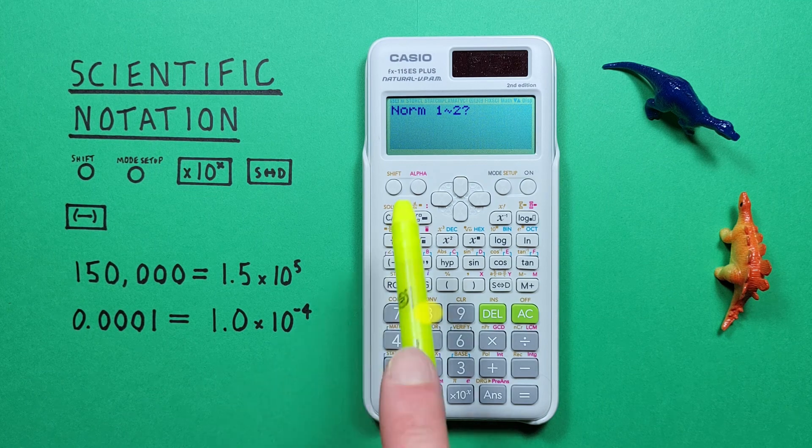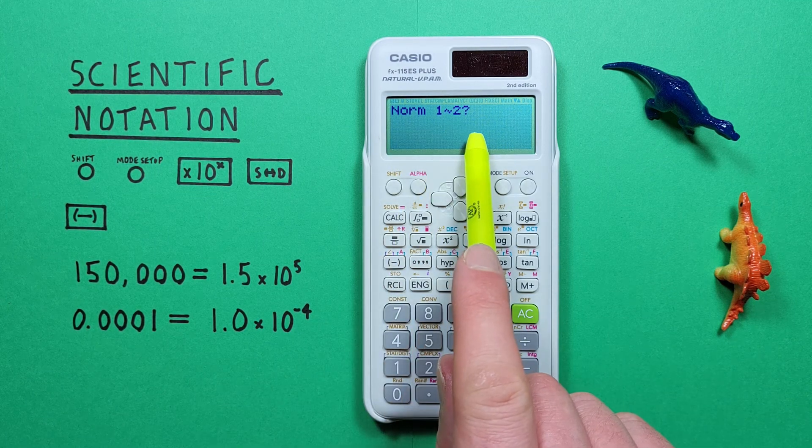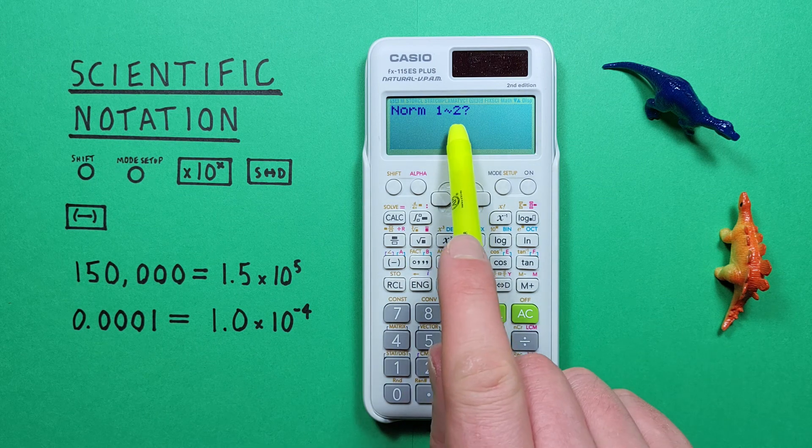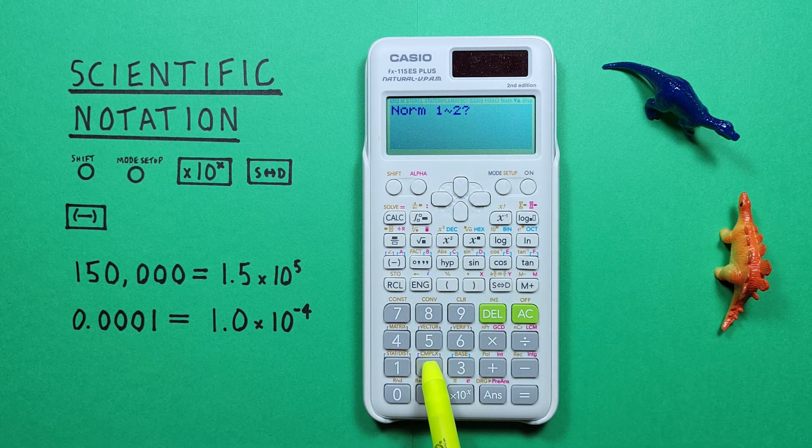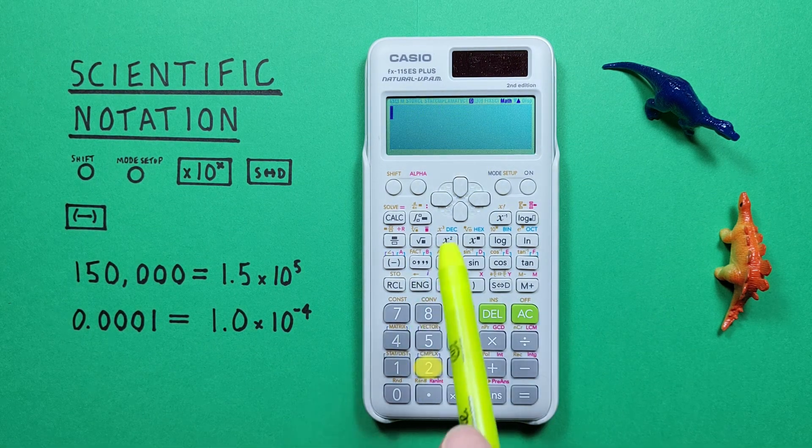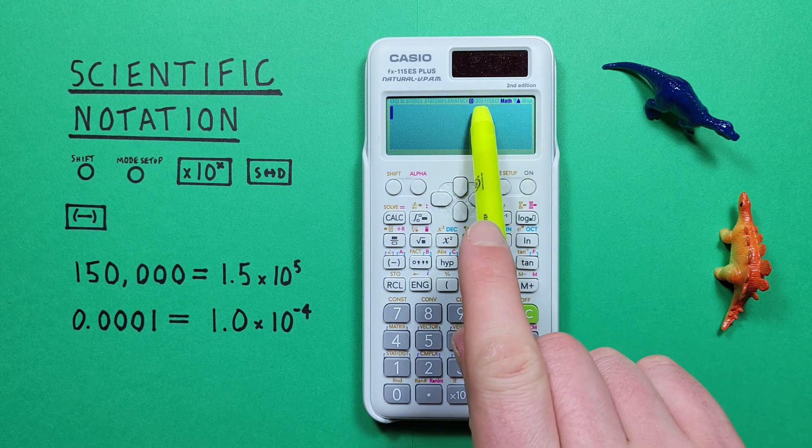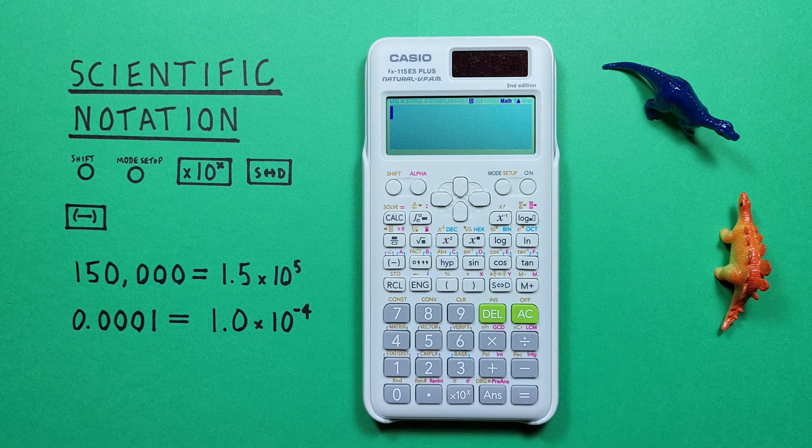And we see we get the choice of norm 1 or 2. For us, we want to choose norm 2. We see the SCI at the top of our screen has disappeared, and we're back to normal mode.